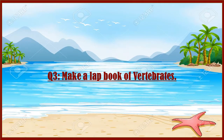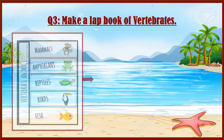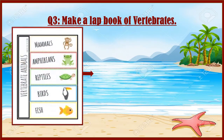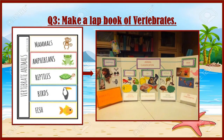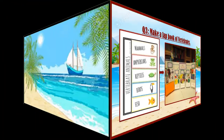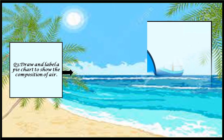Students, you can see in this slide: in the first picture, this is the cover of the lab book, and in the second picture, this is the inside of the lab book. You have to make the lab book on vertebrates. There are five groups of vertebrates: mammals, fish, amphibians, reptiles, and birds. You have to make five portions and paste some stickers, or you can draw something on it — it is totally up to you.